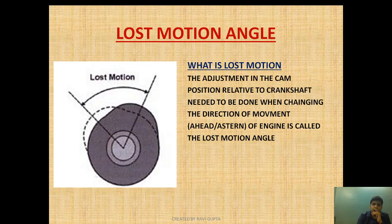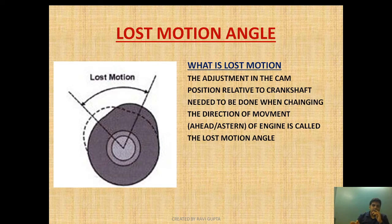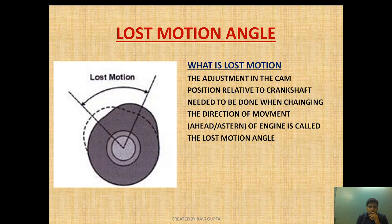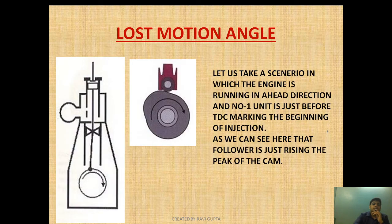First, let's go by definition: what is lost motion? The adjustment in the cam position relative to the crankshaft needed to be done when changing the direction of movement of the engine is called lost motion angle. As we change the crankshaft rotation in ahead or astern direction, we need to make sure the camshaft — which actuates the fuel pump or exhaust valve — is aligned properly for its actuation. This realignment of cam position relative to the crankshaft is called lost motion.